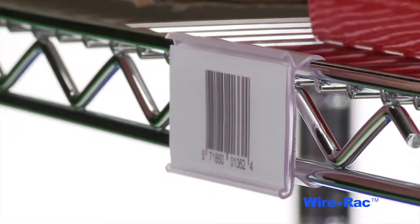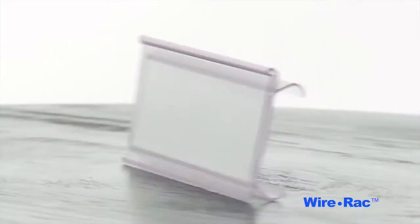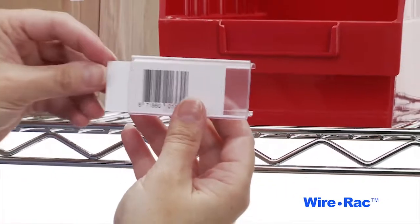Organize your wire shelving with this clear clip-on label holder. These label holders are made of heavy-duty UV-treated PVC and are barcode compatible.